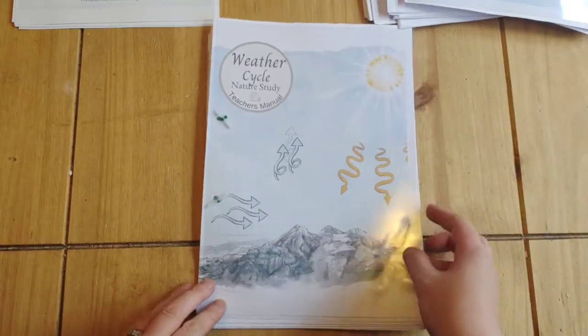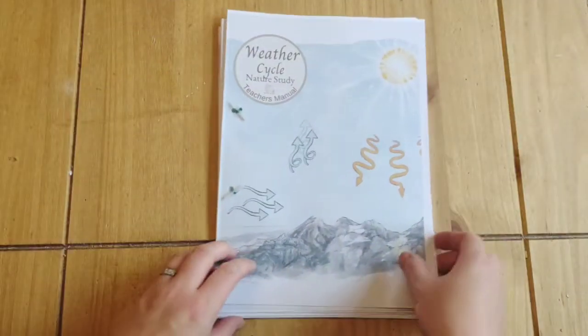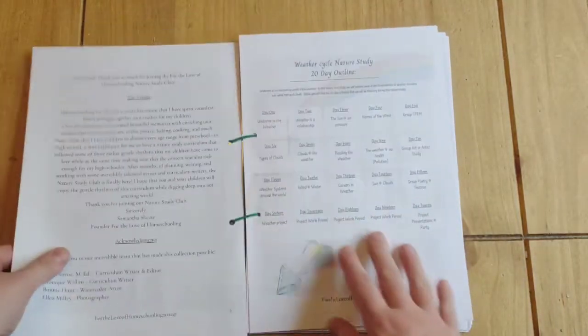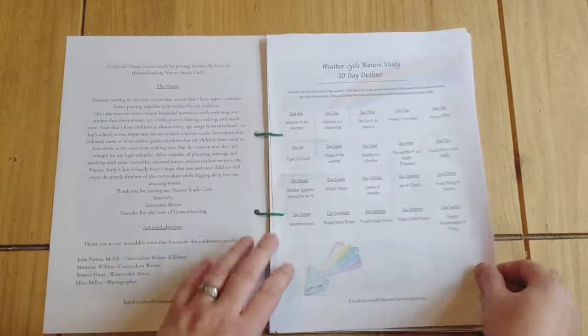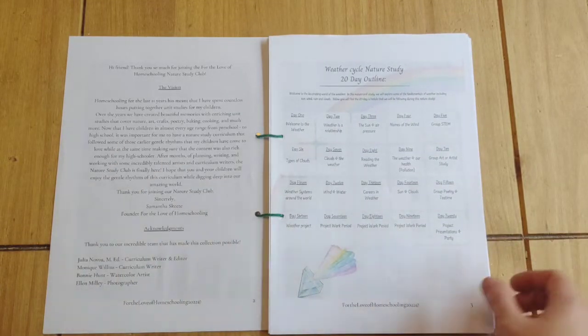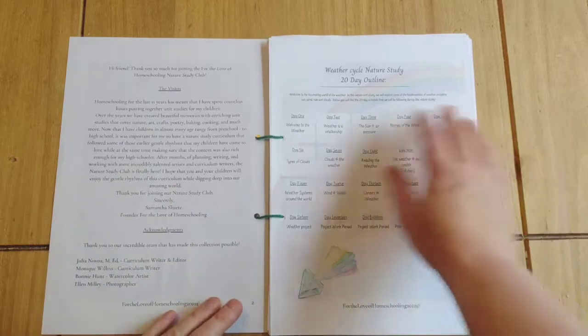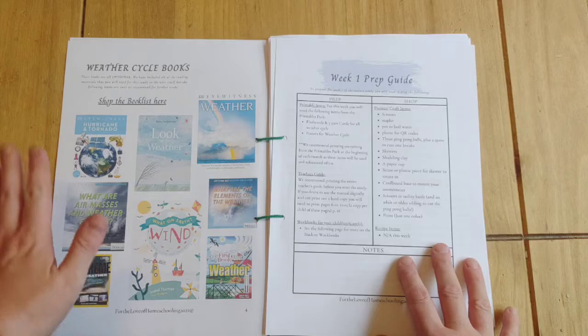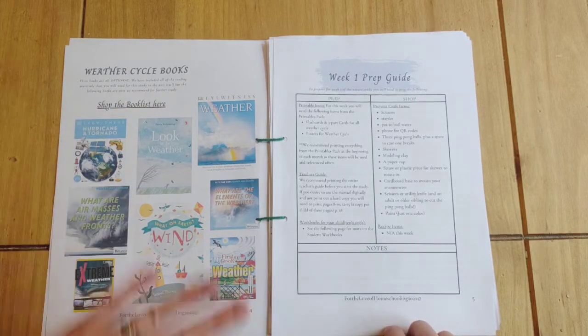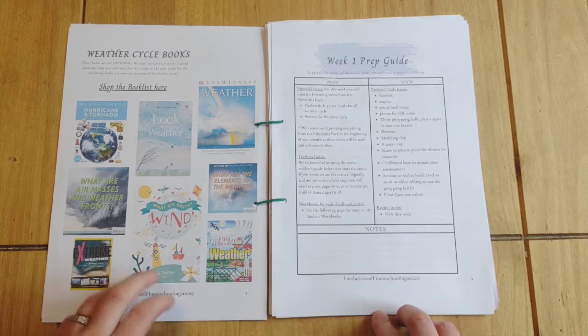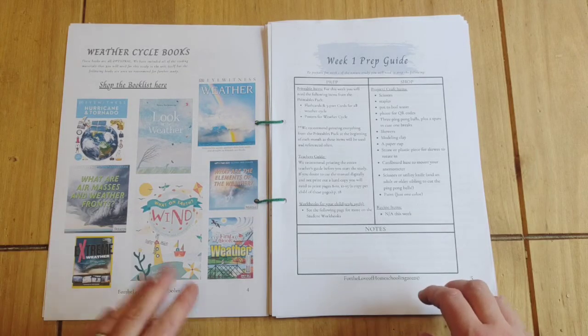It's set out as four days a week. This is the teacher's manual. It's something you print at home, so because of that, you could just pick and choose the bits that you think you would use. But I'll show you how it's laid out. It gives you a 20-day outline at the beginning, some recommended books. We don't have any of the books on this picture, but we do have a lot of other weather books. So I'm not buying any especially, and I'll show you the ones we're using.